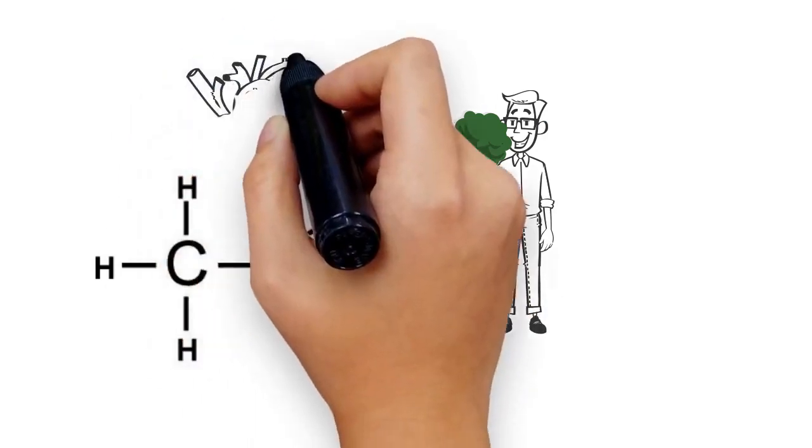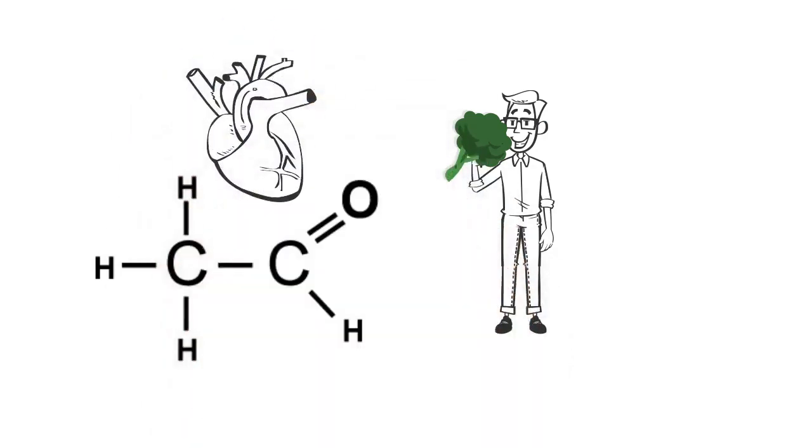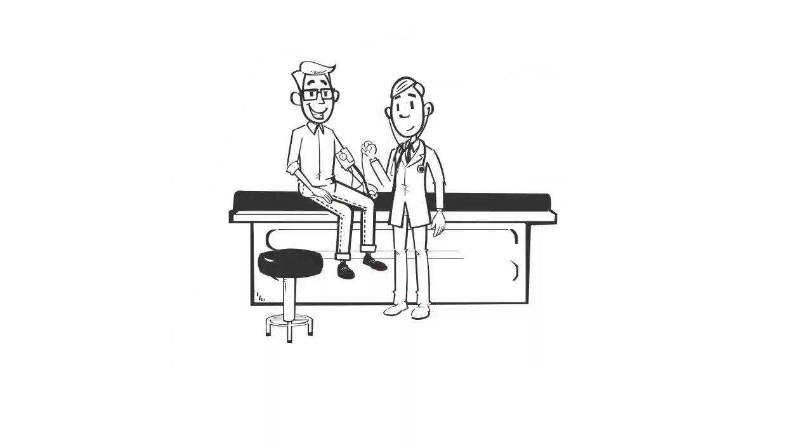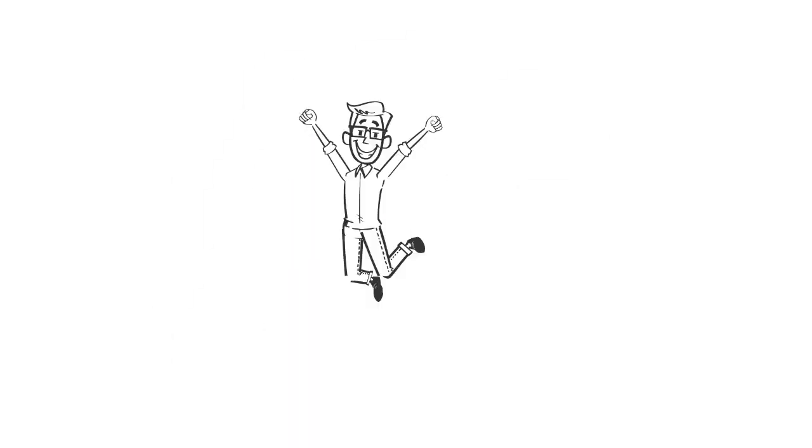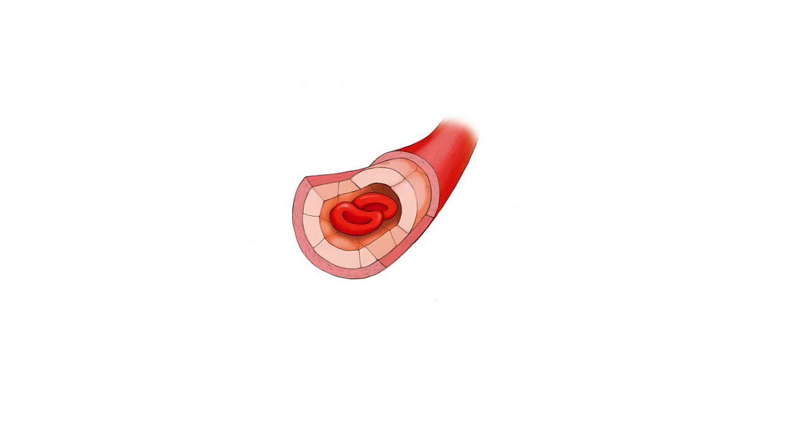This super healthy veggie also offers a heart-healthy dose of fiber, which helps to normalize blood pressure and reduce stress that may cause tears and eventually plaque buildup in arterial walls.